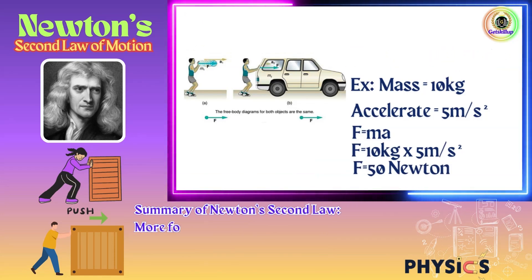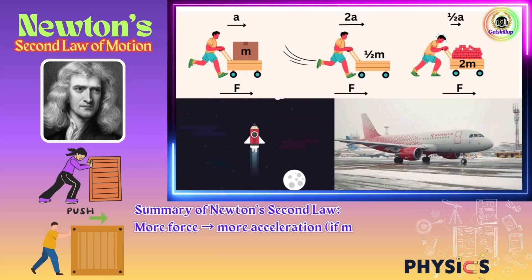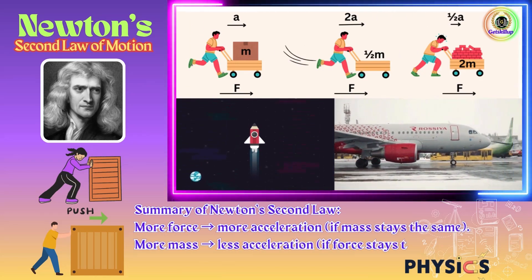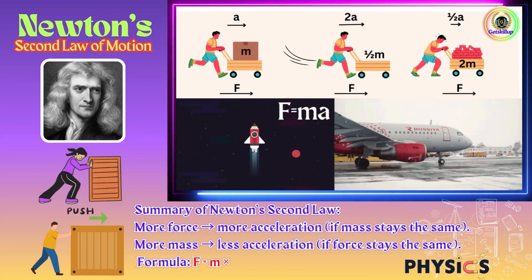Summary of Newton's second law: More force means more acceleration if mass stays the same. More mass means less acceleration if force stays the same. Formula: F = ma.